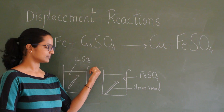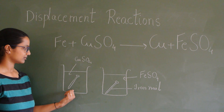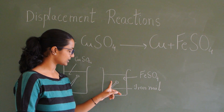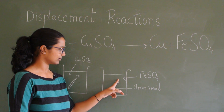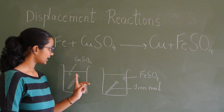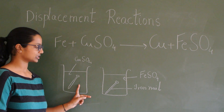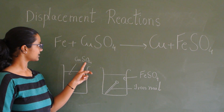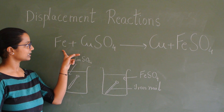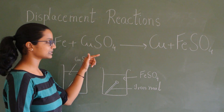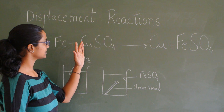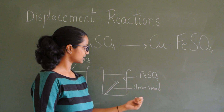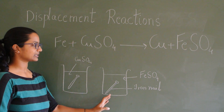Take some copper sulphate solution in a beaker, add an iron nail, and keep the beaker undisturbed for some time. You will observe a reddish-brown appearance on the iron nail after some time, and the copper sulphate solution appears bluish in colour. In course of time, the colour changes to greenish. This is because the copper sulphate solution has reacted with the iron nail, and since iron is more reactive, it has displaced copper, giving iron sulphate which is greenish in colour. This is a good example of a displacement reaction.